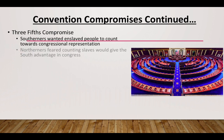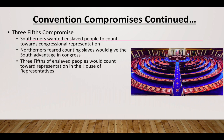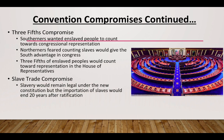Northerners, on the other hand, who were less supportive of slavery, feared that counting slaves would give the South an unfair congressional advantage. This compromise allows three-fifths of enslaved peoples to count towards representation in the House of Representatives. As a result, we also see the Slave Trade Compromise, which stated that slavery would remain legal under the new Constitution, but the importation of slaves would end after 20 years following its ratification.